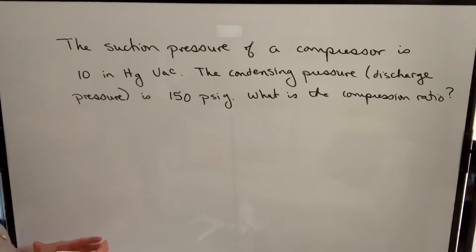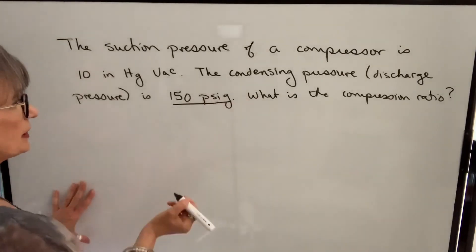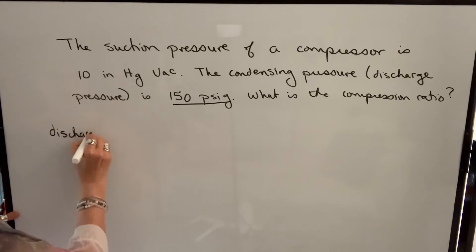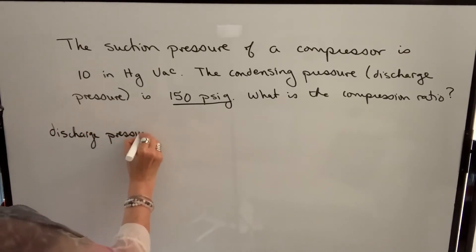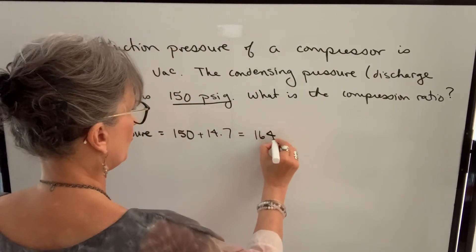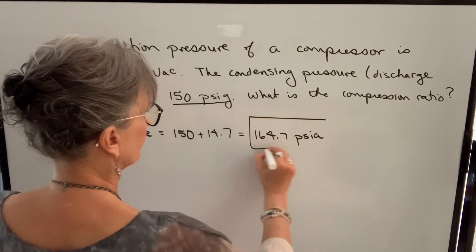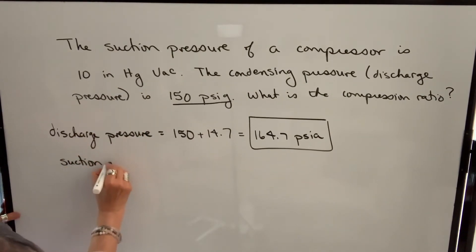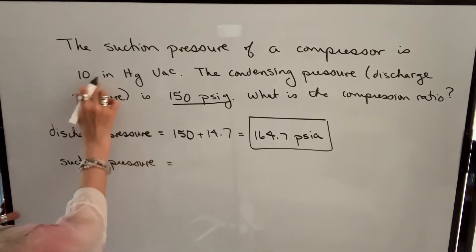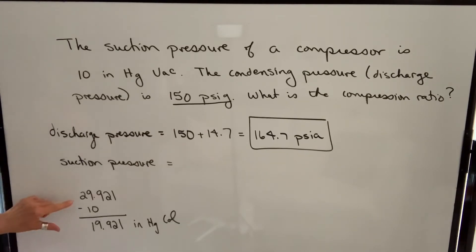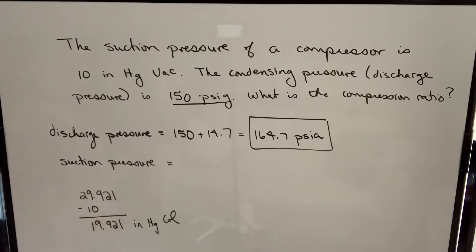We have two pressure units to convert. For the discharge pressure of 150 PSIG, we add 14.7 to get 164.7 PSIA. For the suction pressure of 10 inches mercury vacuum, we first convert to inches mercury column by taking 29.921 minus 10, which gives 19.921 inches mercury column.